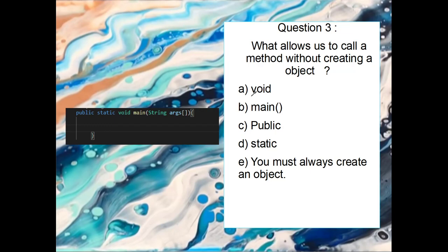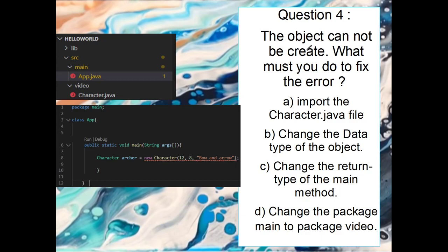Okay, number three. What allows us to call a method without creating an object? Well, like we said before, void is a return type. Main, as we said in the last answer, this is the starting point method. Public is an access point. So it allows us to access that from anywhere. So it leaves us with static or you must always create an object. So you don't always have to create an object. So the right answer is D, static.